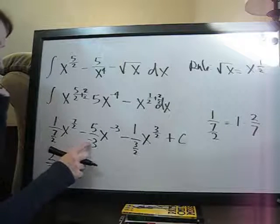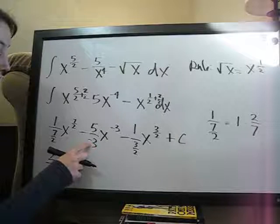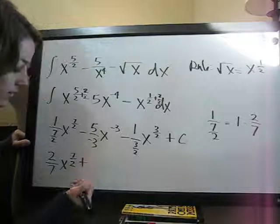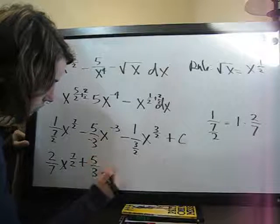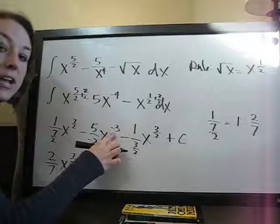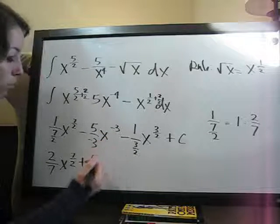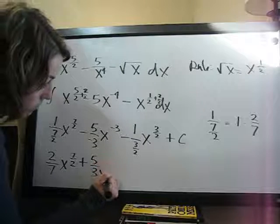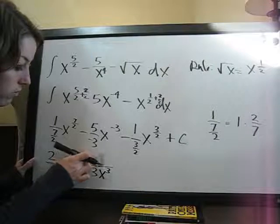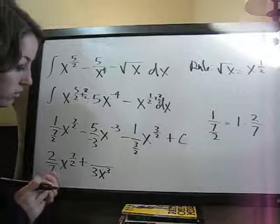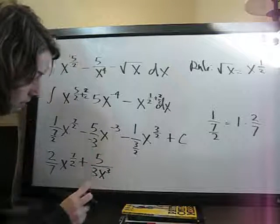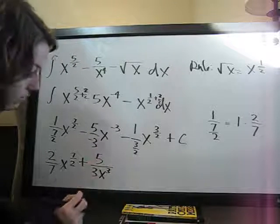We have a negative here on the bottom, so a negative times a negative 5 thirds is going to be a positive. So, plus 5 thirds, and then x to the negative 3, we never want to have a negative exponent in our answer. So we are going to move the x to the bottom, and change the sign on the exponent. So instead of x to the negative 3 in the numerator, we're going to have x to the positive 3 in the denominator. So, 5 over 3x to the third.